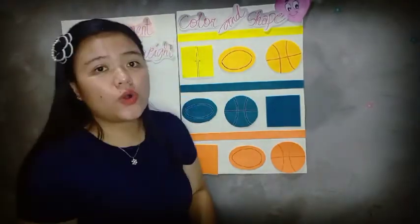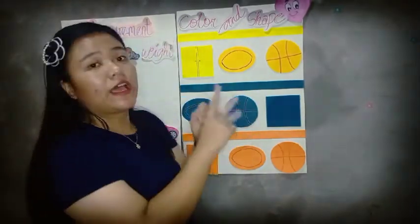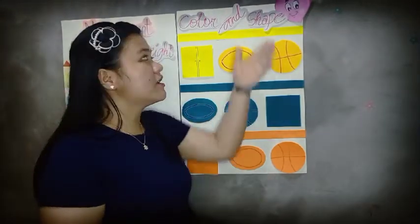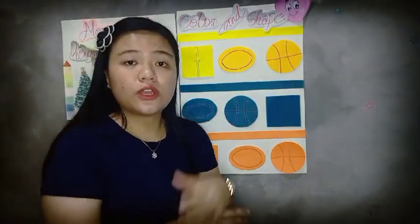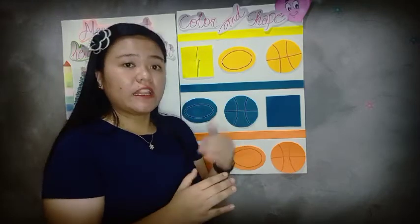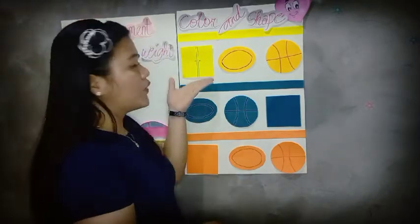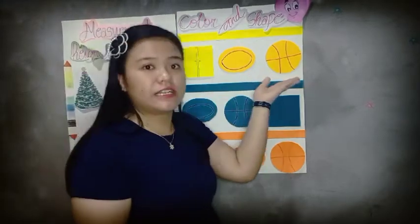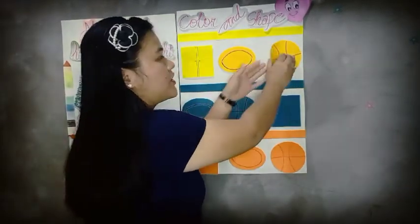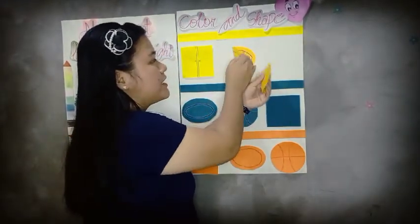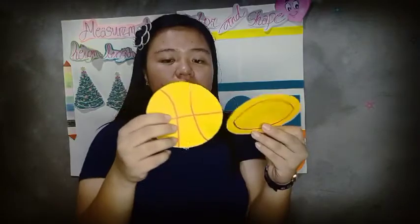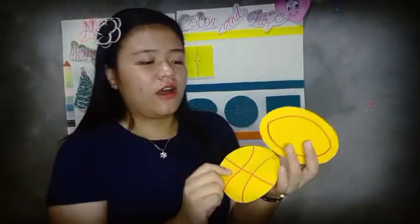Just like before with color — yellow, blue, and orange — now for shape, if we sort objects by shape, we have square, oval, and circle as our three categories. What is the difference between circle and oval? The circle is more perfectly round, while the oval is more elongated in its roundness.